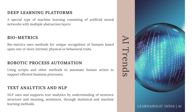The next AI-related technology is Biometrics. It uses methods for unique recognition of humans based upon one or more intrinsic physical or behavioral traits. In computer science, biometrics is used as a form of identity and access management and access control. It is also used to identify individuals in groups under surveillance, currently used in market research. Next is Robotic Process Automation, which uses scripts and other methods to automate human actions to support efficient business processes.